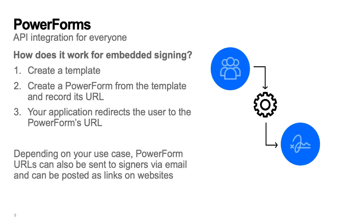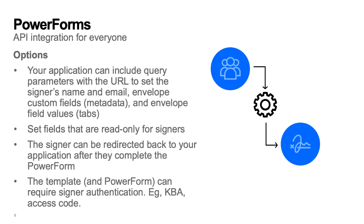Adding a Power Forms embedded signing page to your application is straightforward. First, using the DocuSign web tool, create a template. Then, again using the DocuSign web tool, create a Power Form from the template and record its URL. Step 3, your application redirects the user to the Power Forms URL. And step 4, that's it. Depending on your use case, Power Form URLs can also be sent to signers via email and can be posted as links on websites.